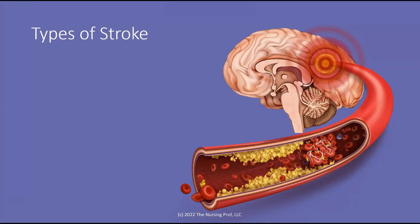Let's talk about different types of stroke. Ischemic type strokes account for about two-thirds of all strokes, and the other type is hemorrhagic stroke. Ischemic strokes, as this diagram illustrates, can result from narrowing of blood vessels, buildup of plaques from atherosclerosis, or a clot that has formed or mobilized from other parts of the body. For more detail, check out our Nursing Emergencies Stroke video.